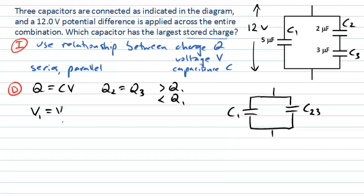That combination C23 has 12 volts across it, the same as capacitor C1, because things that are in parallel always have the same potential difference across them. So V1 will equal V23, and in fact, as indicated in the question, 12 volts is the potential difference across each of those parallel branches.